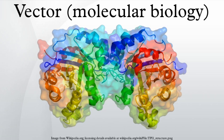In molecular cloning, a vector is a DNA molecule used as a vehicle to artificially carry foreign genetic material into another cell, where it can be replicated and or expressed. A vector containing foreign DNA is termed recombinant DNA.